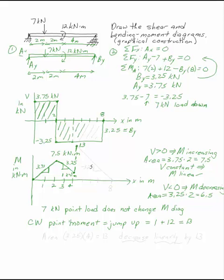Now I have a perfectly constant V with an area under the x-axis. The area under the x-axis is 3.25 times 4, which is 13. So my M is going to decrease linearly by 13. The area is under the x-axis, so you get a decrease. V is constant, so it's linear. You're going to decrease linearly by 13.